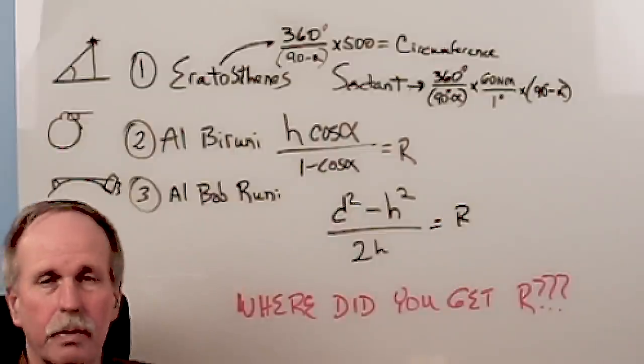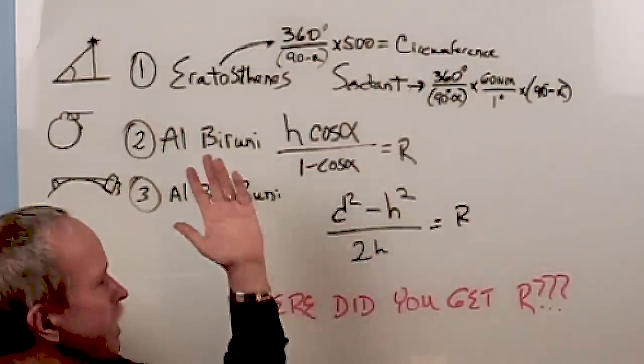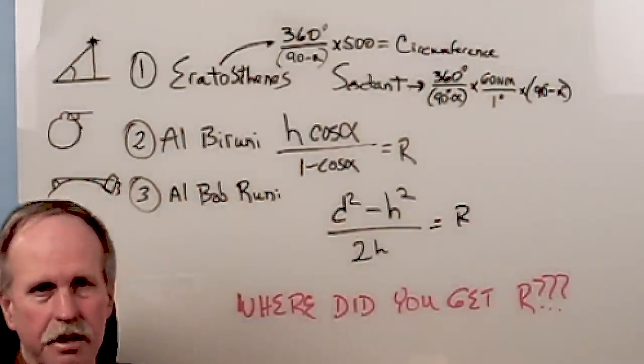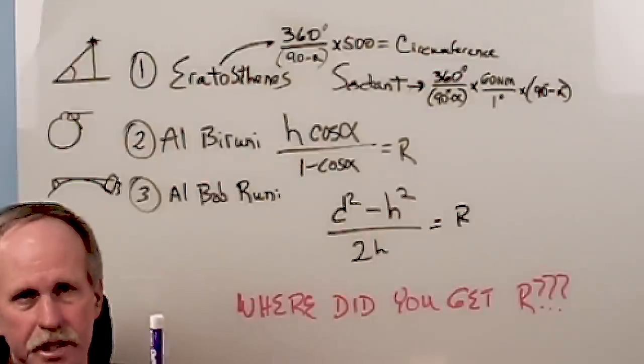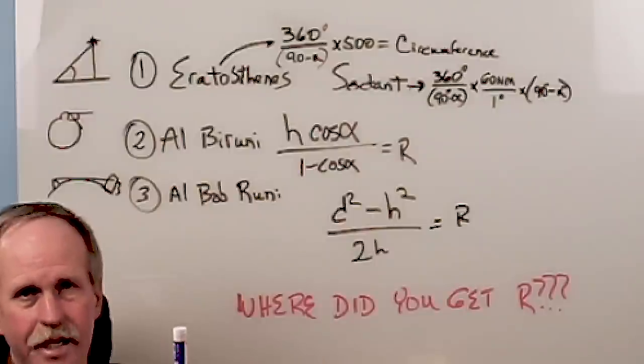Well, let's go ahead and have a quick look at the ways that we traditionally measure the radius of the Earth. The first one, obviously, was Eratosthenes, where we looked at the shadow of a stick in Alexandria and compared it to vertical sunlight in Cyene.